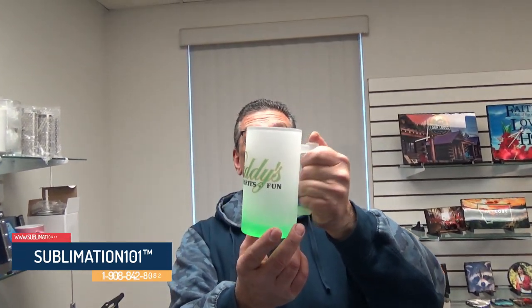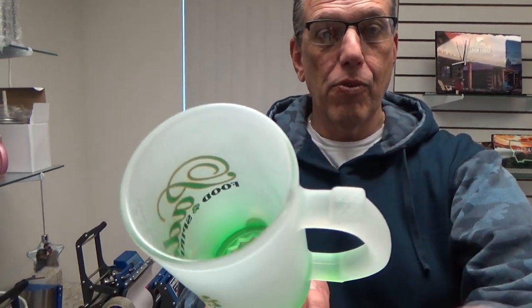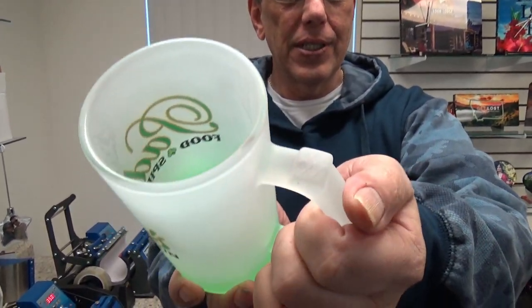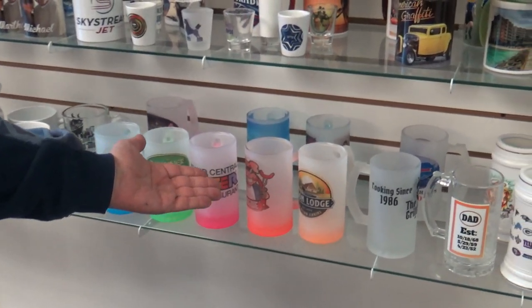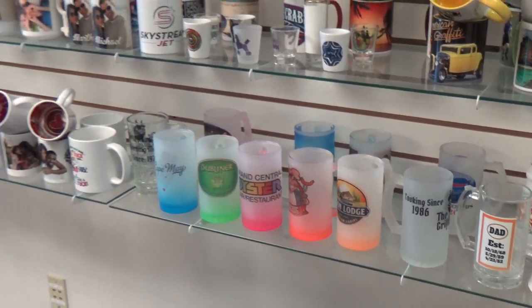Cheers to a new year, guys! Sublimation 101 gradient color frosted beer mug with thumb rest handle so it doesn't slide off. Yes, you can put them in the freezer. Yes, they're 100% sublimatable and they come in different colors. You've got blue, green, pink, orange, and red. How fun and fast is it to make? Come on over, I'm gonna show you.